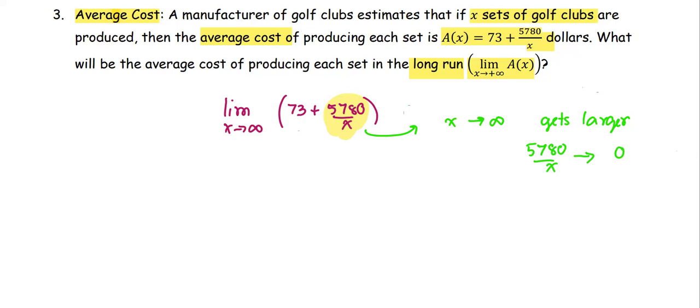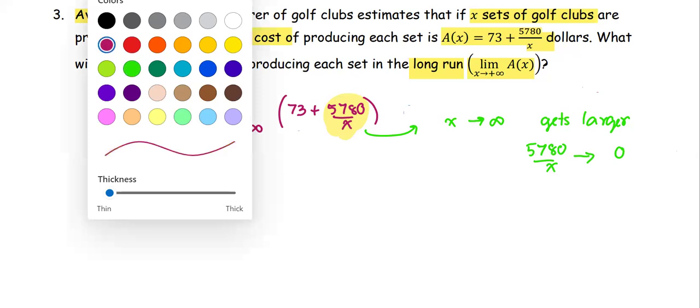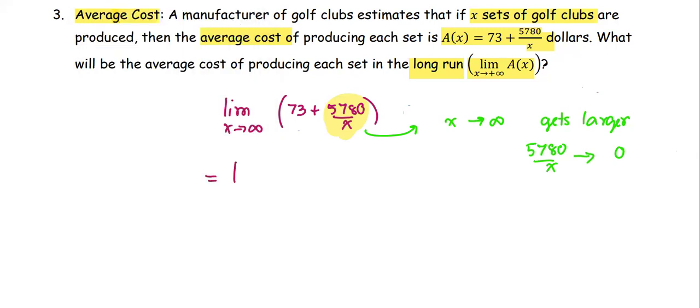The whole quotient will approach a small number, which is 0. If the term here approaches 0, then the limit value for this problem is going to be the limit of 73 plus 0 as x approaches infinity.